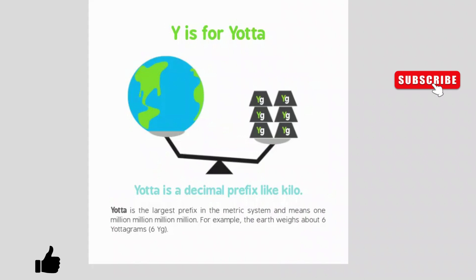Y is for yota. Yota is a decimal prefix like kilo. Yota is the largest prefix in the metric system. It means one million, million, million, million. For example, the Earth weighs about six yotograms.